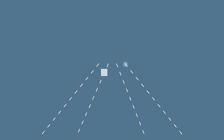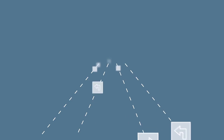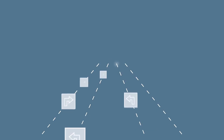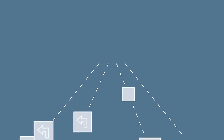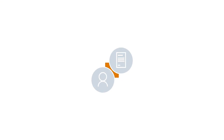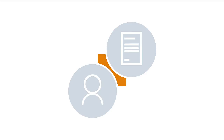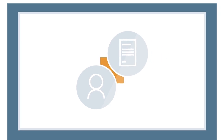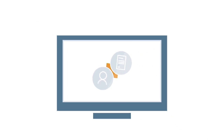Like a navigation system, Stages guides the users through the processes that are relevant for them. The processes are visualized for all participants in a simple and easy to understand manner. This way, Stages shows the right information to the right person at the right time.